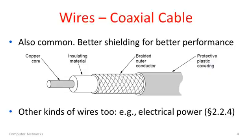You can see here it's built differently from twisted pair. Instead of just twisting a couple of pairs of wire, it has a metal core in the middle, and also an outer conductor around the edge, instead of two wires, and it's put together in a nice way. Both the twisted pair and the coaxial cable are the most common kinds of wire, and they're designed for communications.